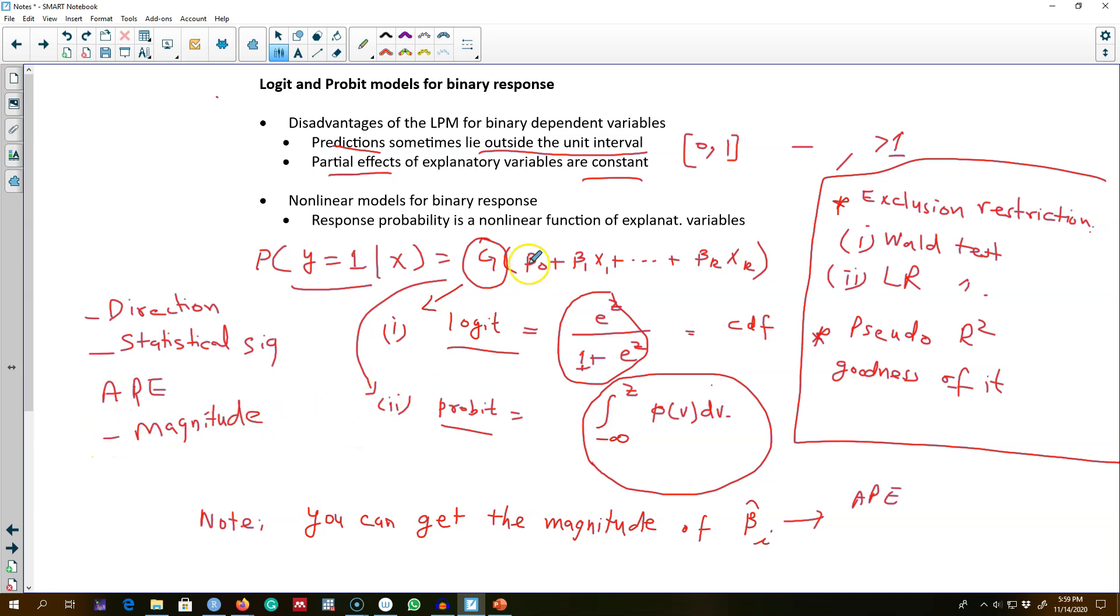This is the main difference between the usual models that we were seeing so far and the linear probability model that we saw earlier, that we can get all these three things from the regression output. But with the logit and probit model, you can get the direction and statistical significance of the slope coefficients straightforwardly from the regression output. But to get the magnitude of the relationship, you have to calculate average partial effects.